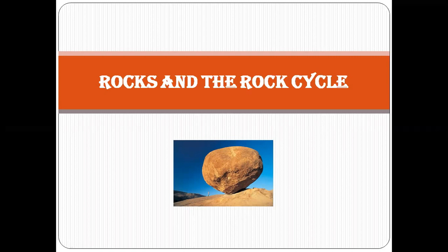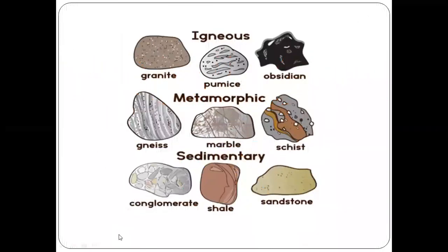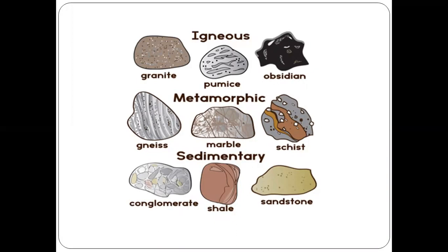Welcome back to my channel. Today we are going to look at rocks and the rock cycle. Rocks can be broadly divided into three categories: igneous rocks, metamorphic rocks, and sedimentary rocks. Each of these rock categories can further be divided into a number of different types. For example, granite is one type of igneous rock, marble is one type of metamorphic rock, and sandstone is one type of sedimentary rock.